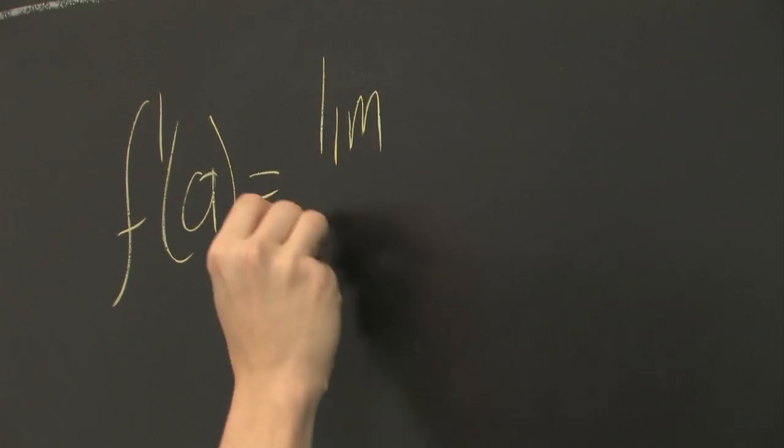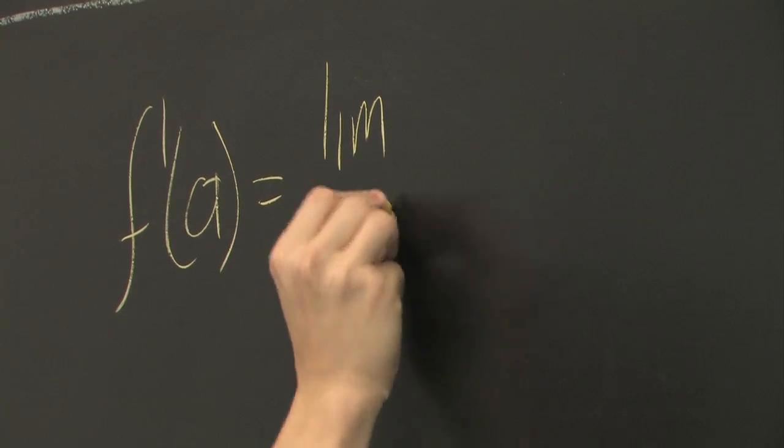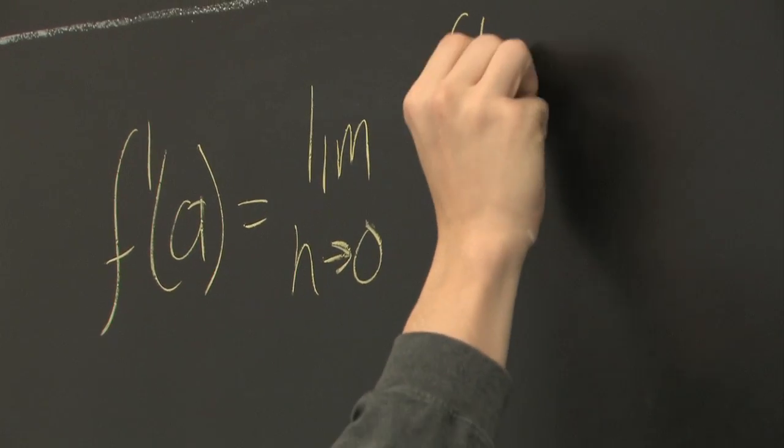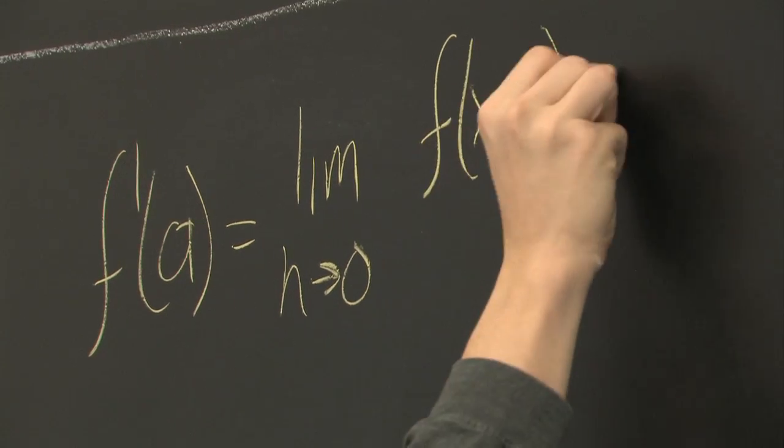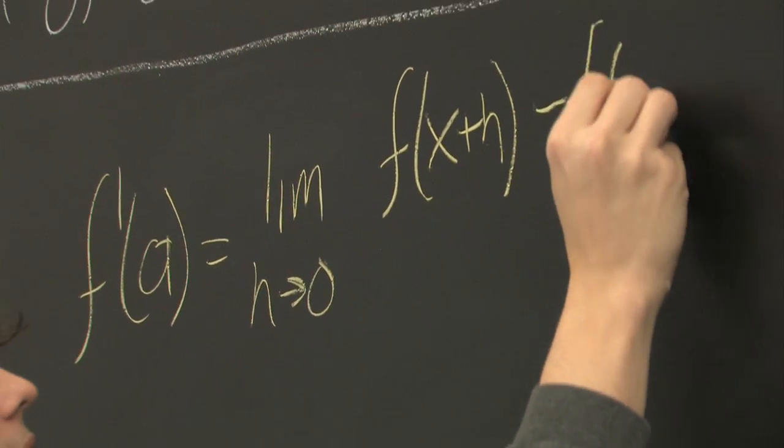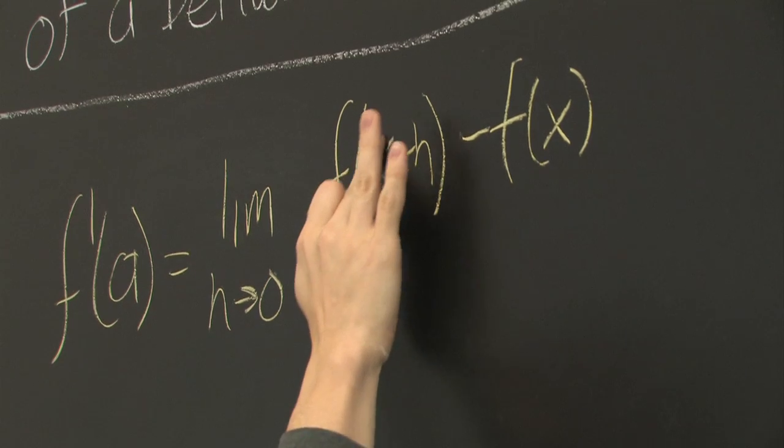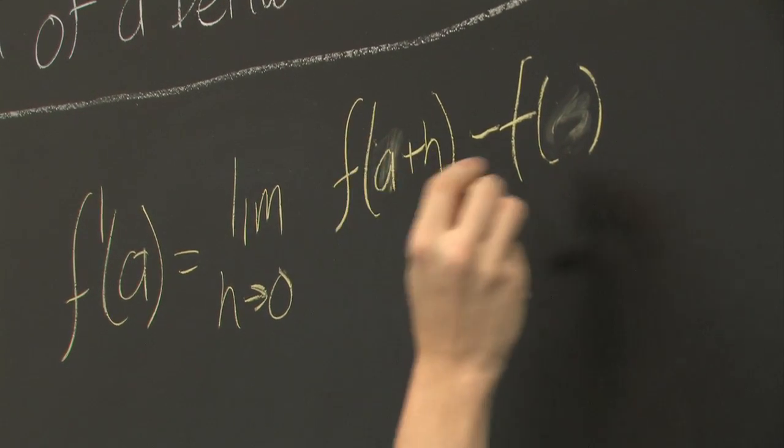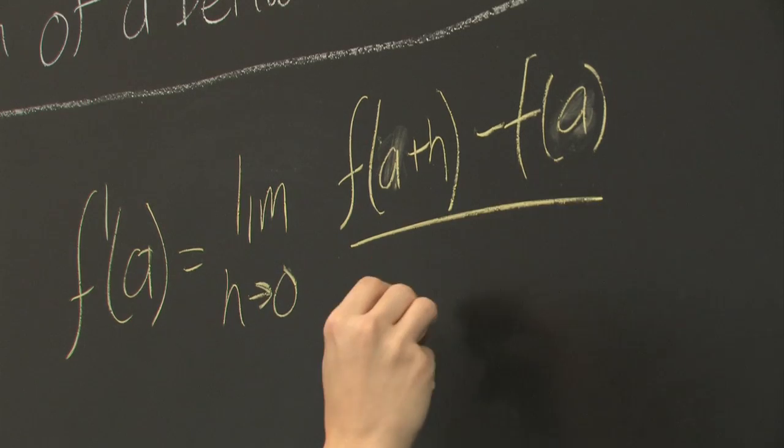One of them is the limit as h goes to zero of f of x plus h minus f of x. Here, we'll substitute in a for x, all divided by h.